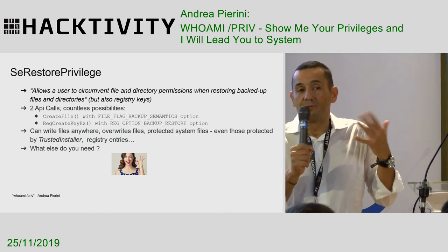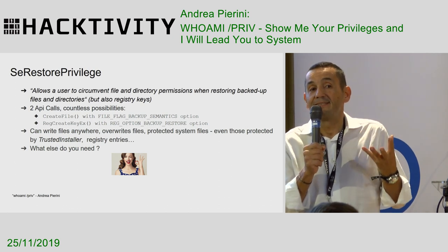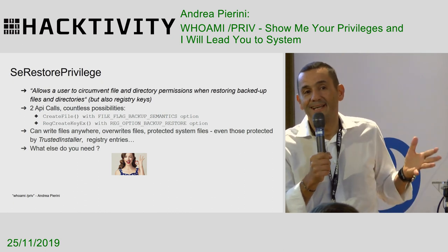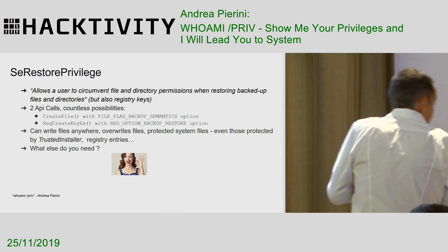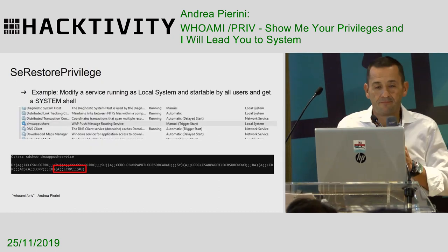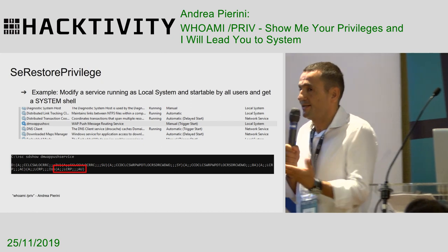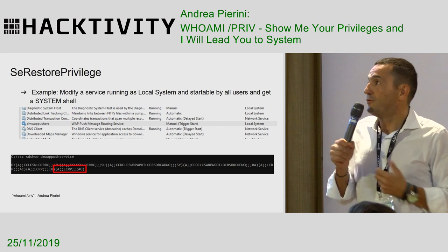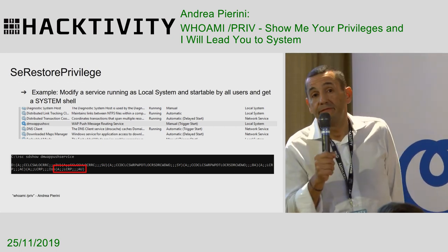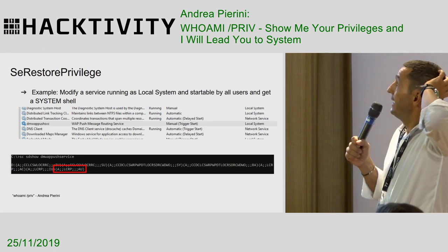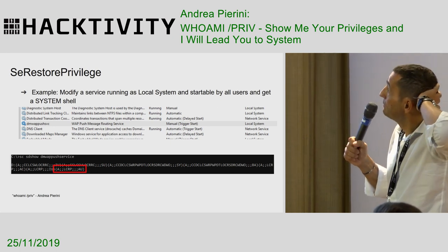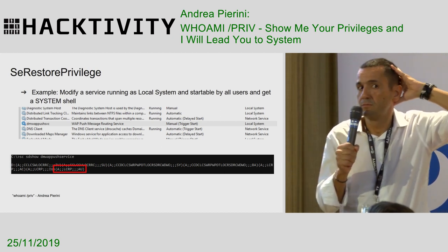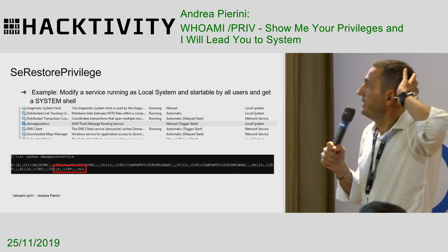So the restore privilege — if I have restore privileges, gaining system rights is just like drinking a bottle of good Italian wine. I have one example to show how to perform this task. I will modify a service configuration — in this case the WAP push message routing service, which is present on each Windows installation starting from 2016. This service is interesting because a standard user can start it.